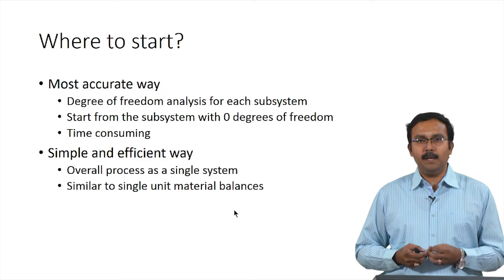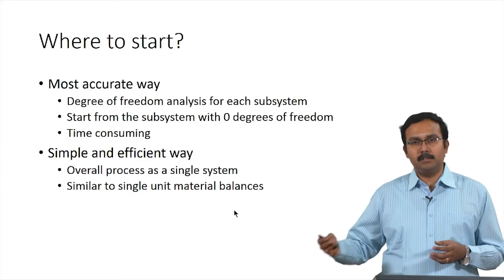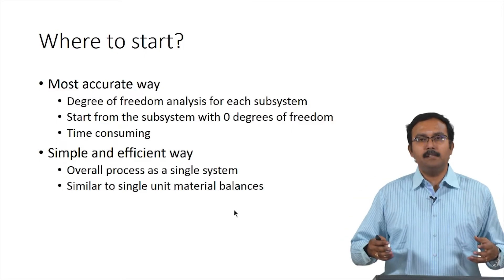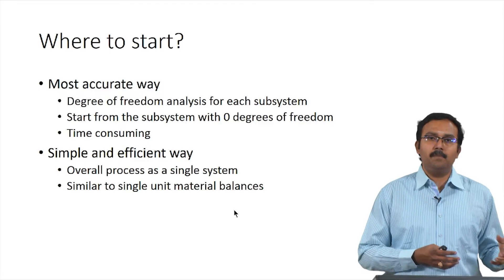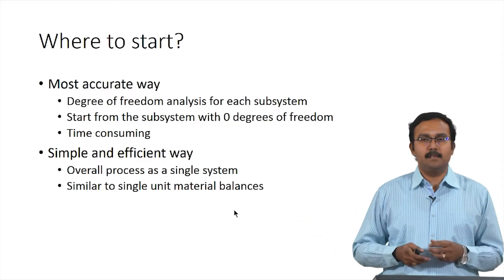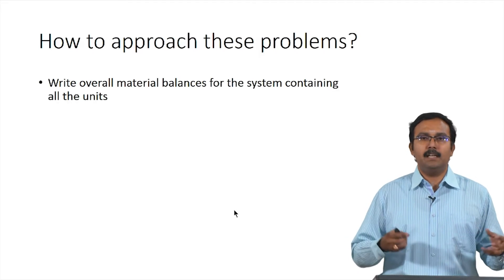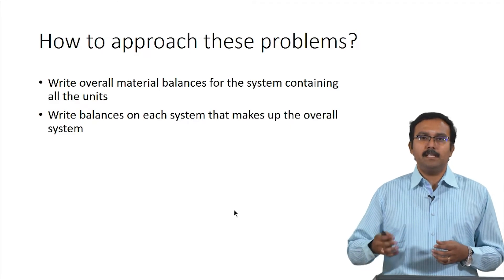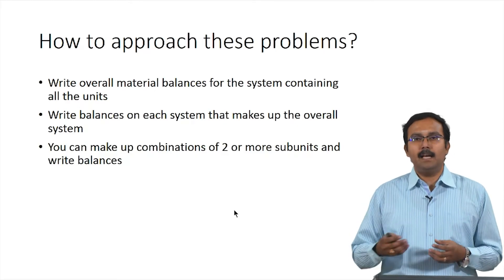A simpler and more efficient approach is to start with the overall process as a single system, and then continue with individual processes. When the overall process is treated as a single system, the entire process behaves like a single unit, and material balances are performed similarly to what we have done before. We write the overall balances first, then balances for each subsystem, and we can also write balances for combinations of sub-units.